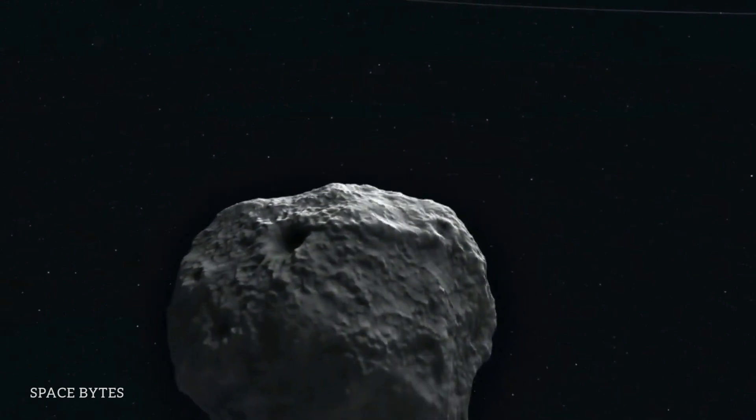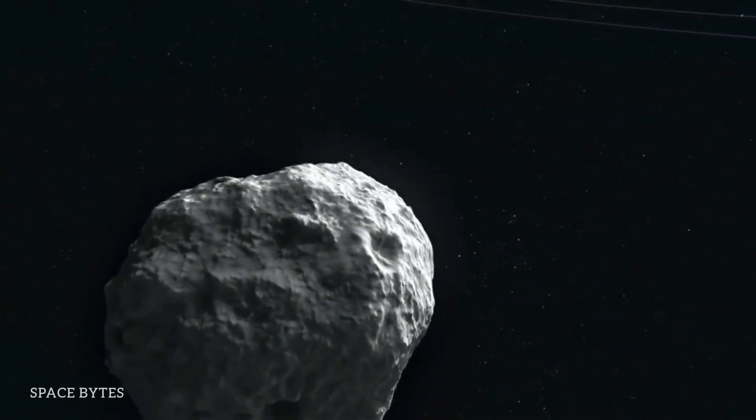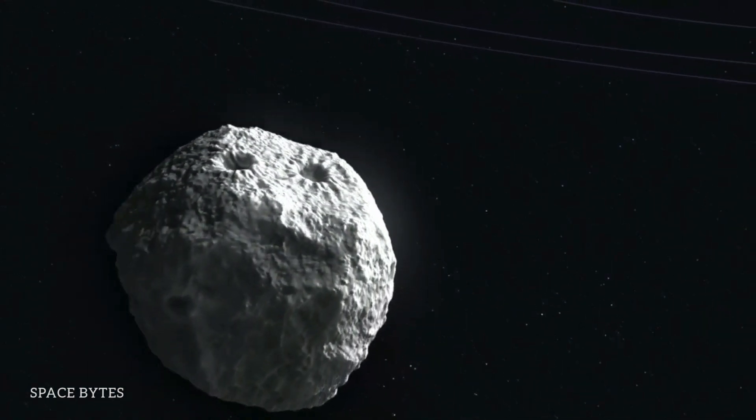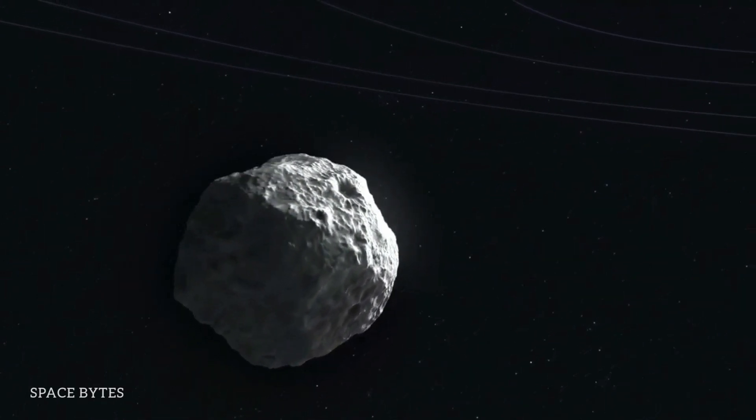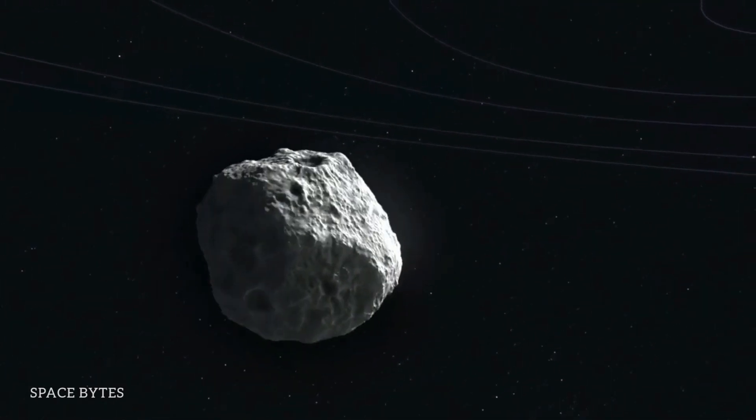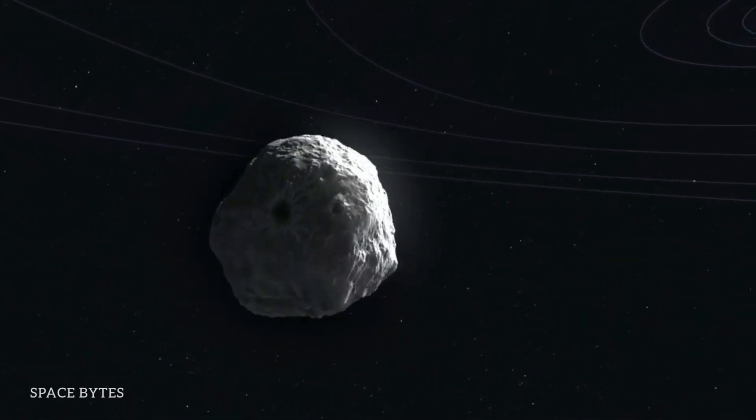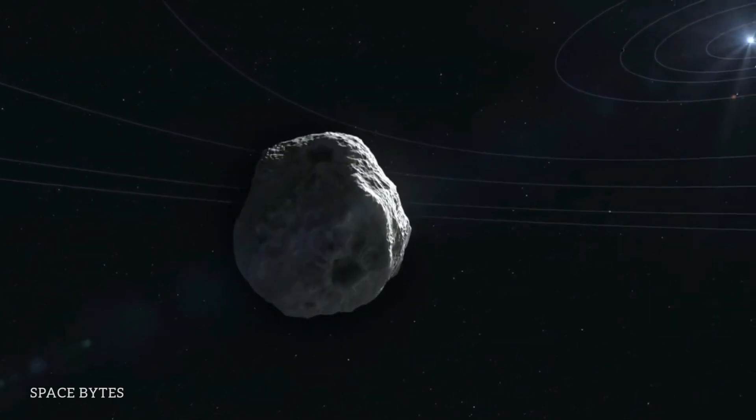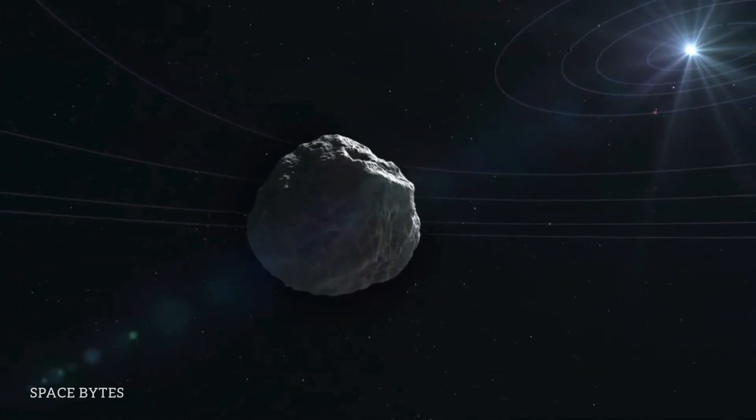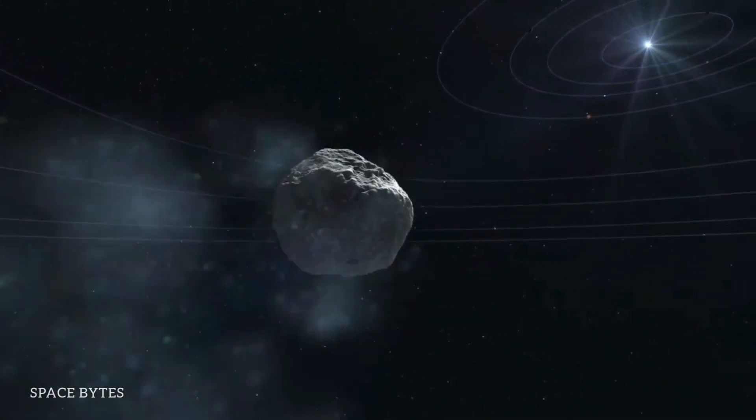The first and largest asteroid 29075 in this list is not going to come till 2880. It is also three times the size of the Empire State Building in the United States and was once believed to have the highest probability of hitting the Earth.